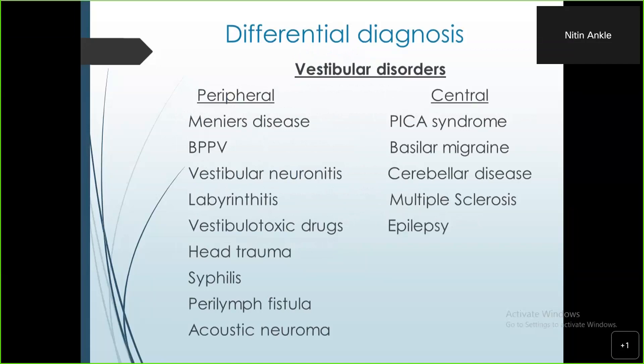Meniere's is a disease of exclusion; investigations are helpful but not diagnostic. Your history, examination, and thorough clinical evaluation are the most important parts in diagnosing Meniere's disease or syndrome. The diseases mimicking Meniere's disease include benign paroxysmal positional vertigo, which typically lasts only a few seconds, and vestibular neuronitis, which is severe and lasts more than 24 to 48 hours.